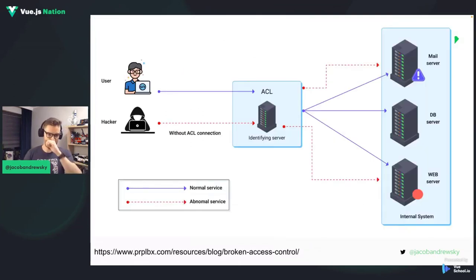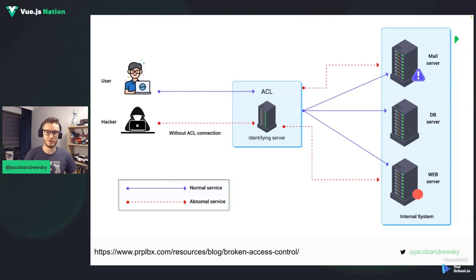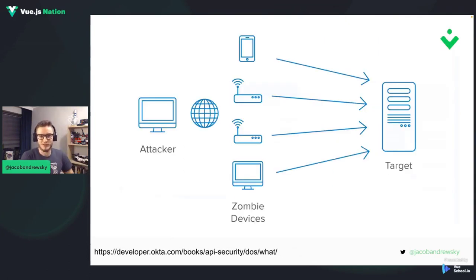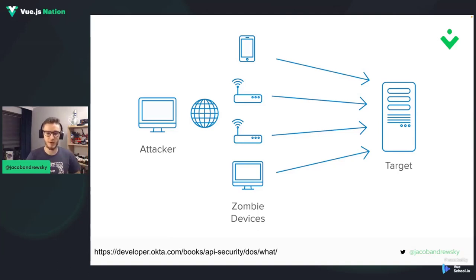Next we have broken access control. A user goes through the normal flow, authenticating or authorizing through some kind of ACL — an access control layer. In some cases, users may be able to bypass this ACL layer and gain access to data they shouldn't have access to. The third one, which is actually my favorite, is DoS or DDoS — denial of service — where so many requests are sent to an application that it simply cannot respond and gives up.